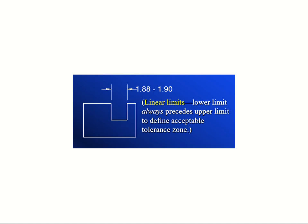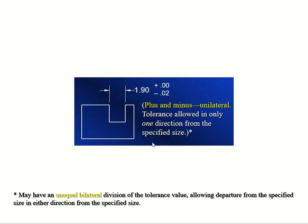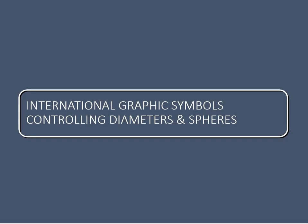The last one — we write it this way. It's kind of like stacked and linear but you have 1.90 for the upper. We also have a plus or minus, so this is called unilateral — 'uni' meaning one. Plus 0.00 and minus 0.02 — the tolerance is allowed in only one direction from the specified size.